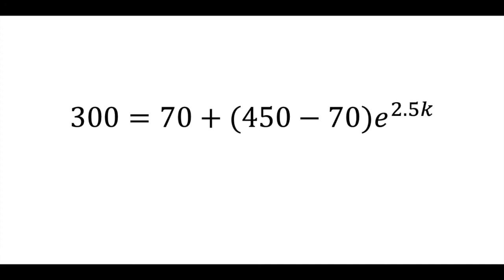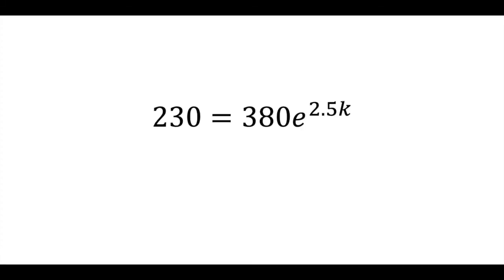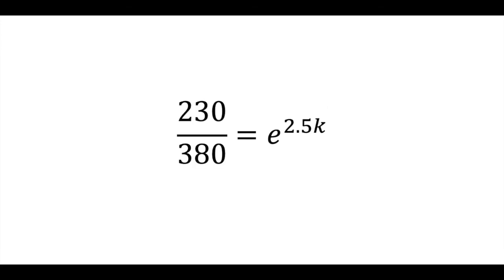Simplify. Subtract 70 from each side and clean up the subtraction inside the parentheses. 230 equals 380 times E to the 2.5K. Divide both sides by 380 to isolate the exponential expression. 230 over 380 equals E to the 2.5K.